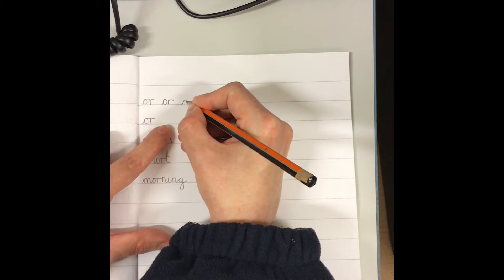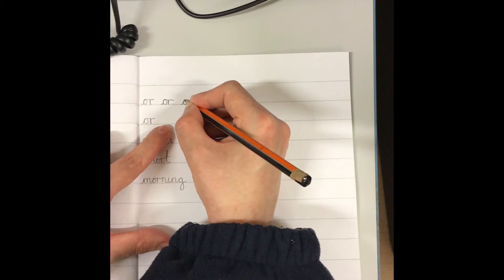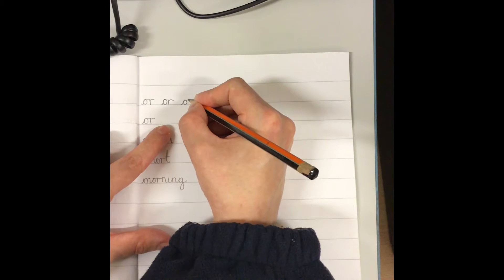Sweep up and around and stop, back the way we came, all the way back to the top, across, down, up, over, flick. Could you do two whole lines?